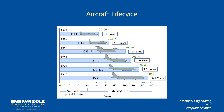The C-130 started flying in 1951 and those are still flying today. KC-135s, based on the 707, went into service in 1945 and are expected to continue serving into the 2040s — 86-plus years. The B-52, which we'll look at in more detail, first entered service in 1946 and is also expected to continue serving into the 2040s.